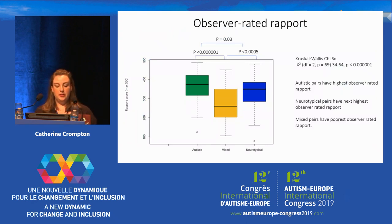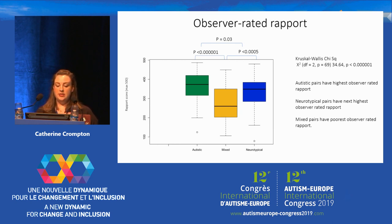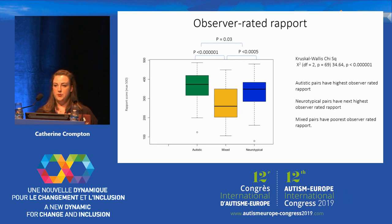Here are the initial results from Study 2, with the data from all raters — autistic and neurotypical — collapsed together. We have the ratings for autistic pairs in green, mixed pairs in yellow, and neurotypical pairs in blue. Pairs of autistic people have the highest level of observer-rated rapport — meaning that observers who do not know their diagnosis think these people get on best. Neurotypical pairs have the next highest observer-rated rapport, and mixed pairs have the lowest levels of observer-rated rapport.